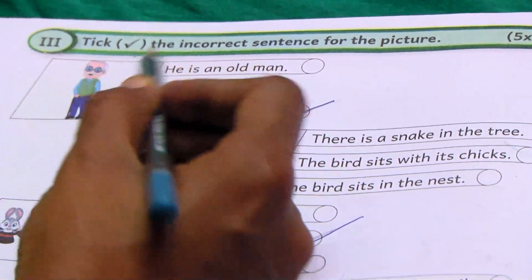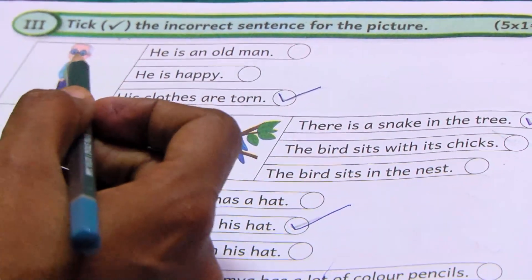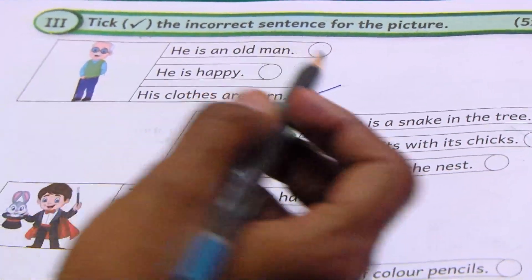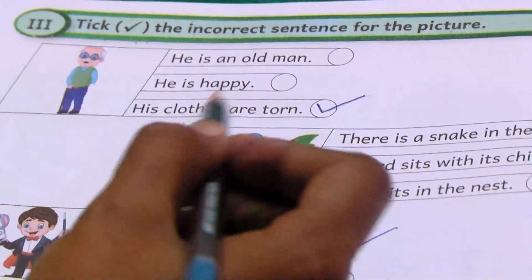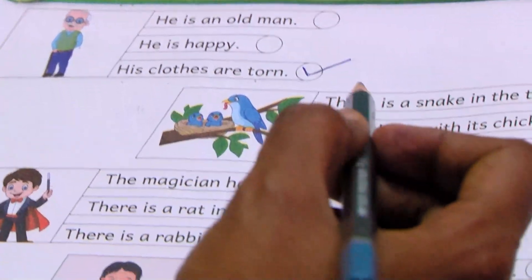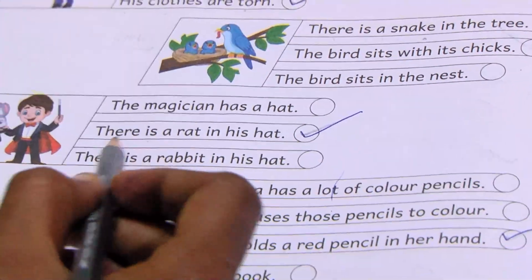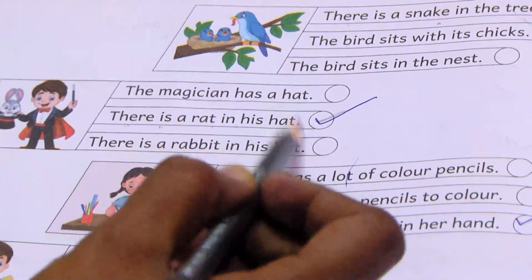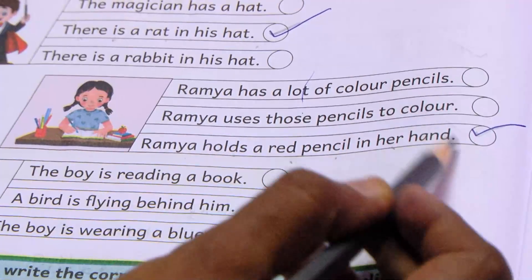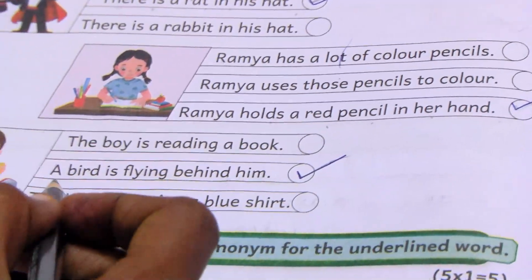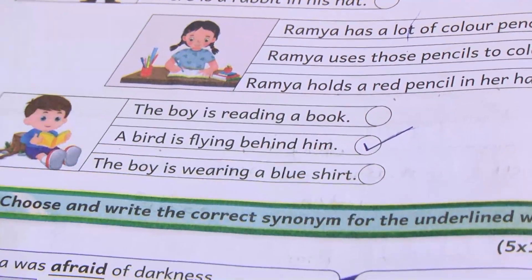Next one, tick the incorrect sentence. For the picture: His clothes are done. There is a snake in the tree. There is a rat in his hat. Ramya holds the red pencil in her hand. A bird is flying behind him.